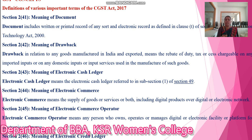Next, Section 2, subsection 43: meaning of 'electronic cash register.' Electronic cash register is defined under the relevant subsection. Next, Section 2, subsection 44: meaning of 'electronic commerce.' Electronic commerce means the supply of goods and services or both, including digital products, over a digital or electronic network.